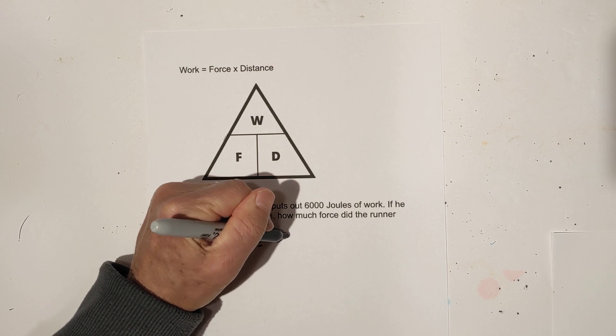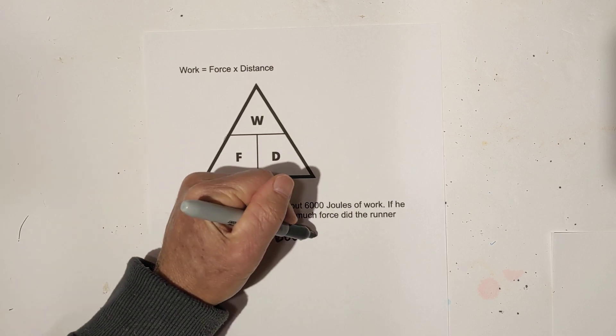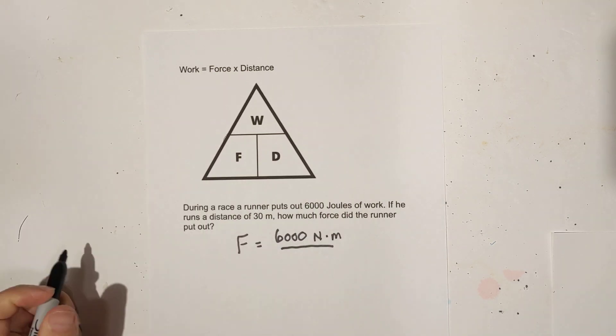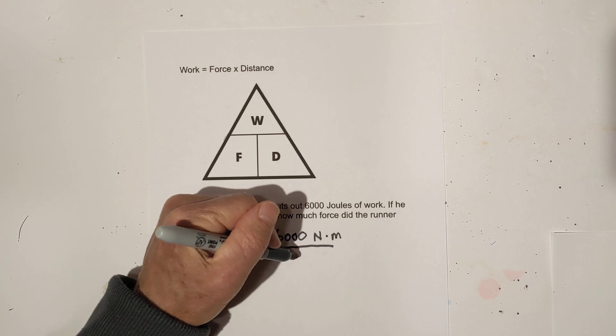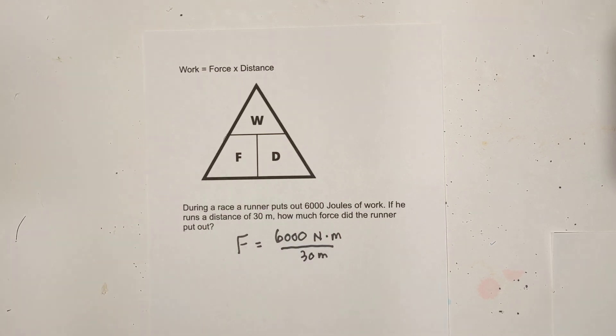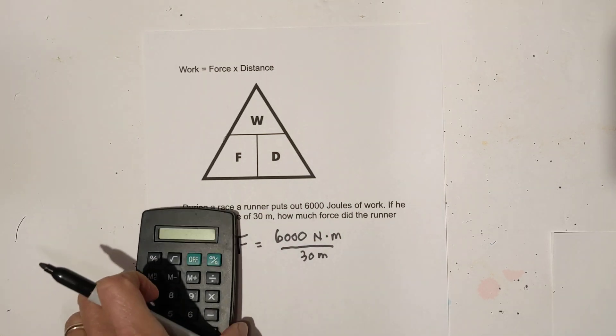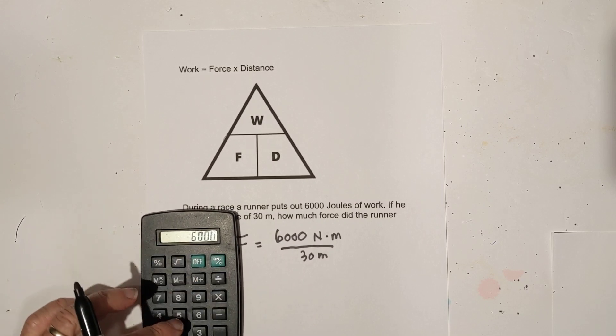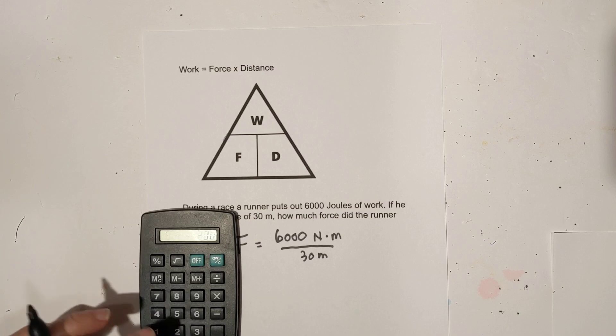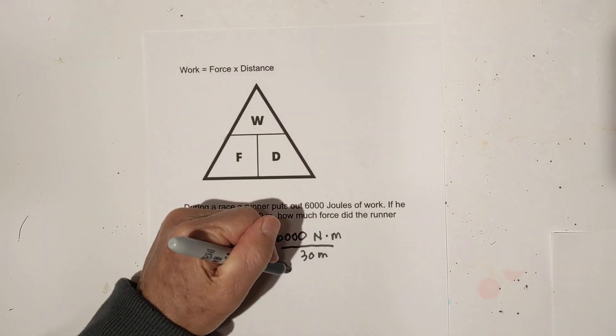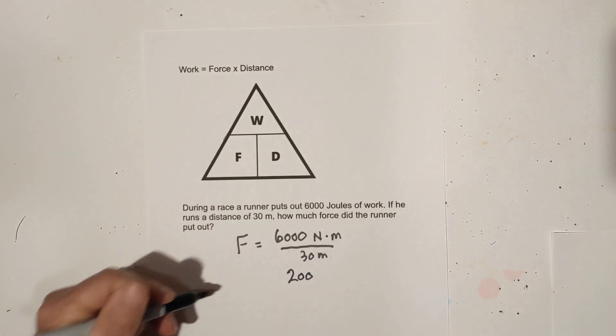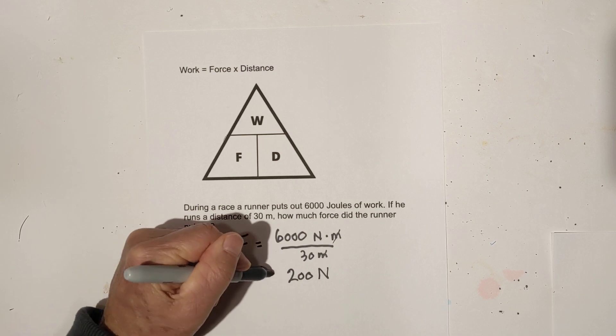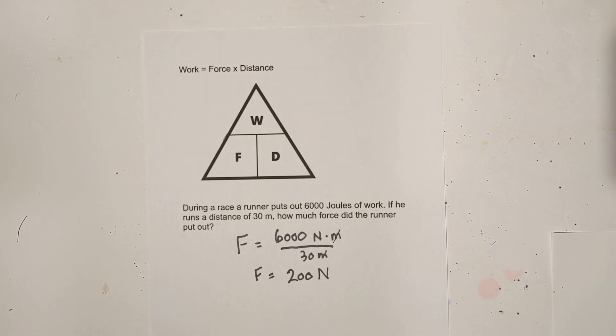We've got 6,000 joules, and I'm going to rewrite instead of joules, newtons times meters because that's how it's measured, and it's a distance of 30 meters. So you just take 6,000 divided by 30 and that gives you 200. Now let's look at the units. The meters cancel and you're left with newtons. So it is a force of 200 newtons.